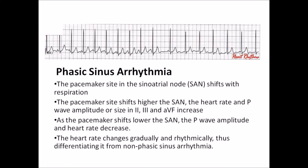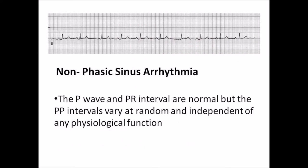This is phasic sinus arrhythmia. The rhythm is irregular, and the P wave is prominent at the beginning but shows a decrease in amplitude as the rate decreases. For non-phasic or non-respiratory sinus arrhythmia, the P wave and PR interval are normal, but the PP intervals vary at random and independent of any physiologic function. The rhythm is irregular with upright P waves and a normal PR interval; at a higher rate, the P wave is more prominent compared to its lower rate.